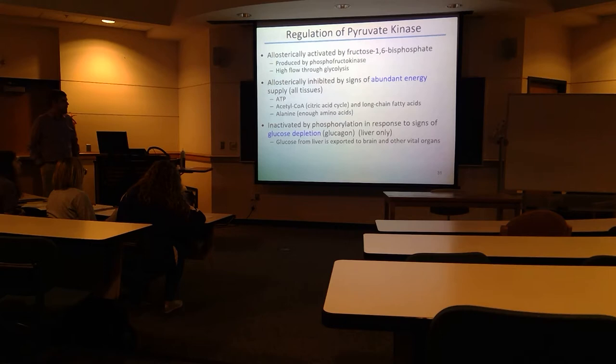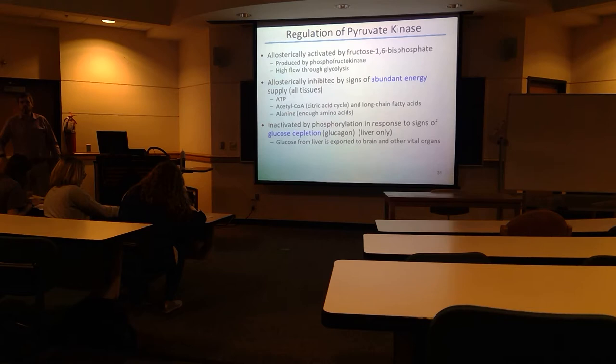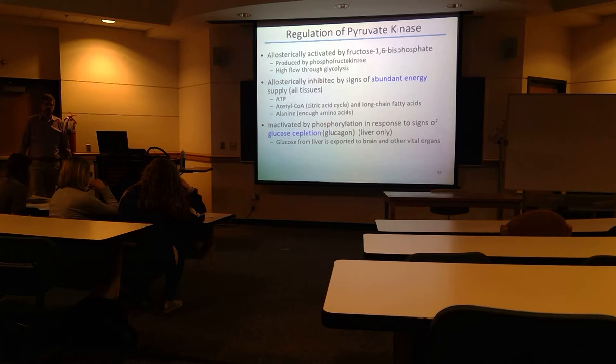A high level of acetyl-CoA, which comes from one of the products of the citric acid cycle, is another indicator of high energy. If that level is high, it will inhibit pyruvate kinase. Also, if you have a lot of alanine amino acid, that's another indicator that you have plenty of energy. So all these things are going to inhibit pyruvate kinase.